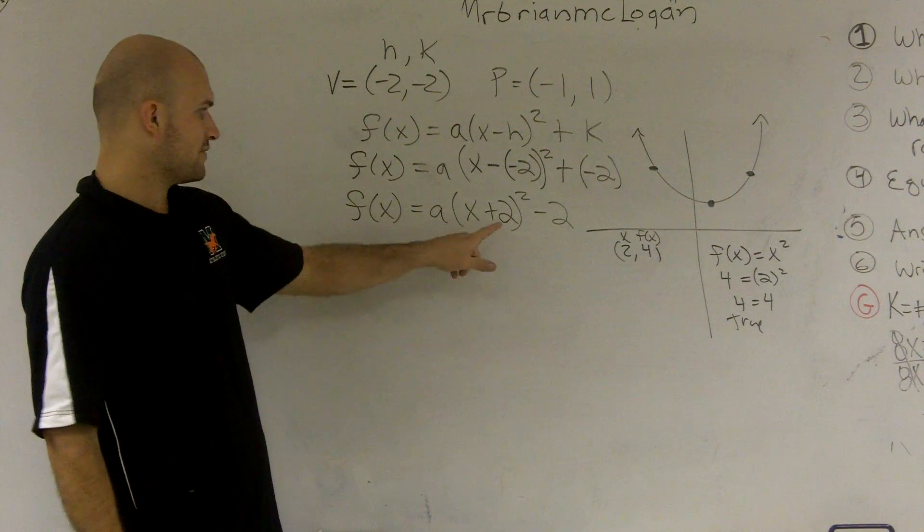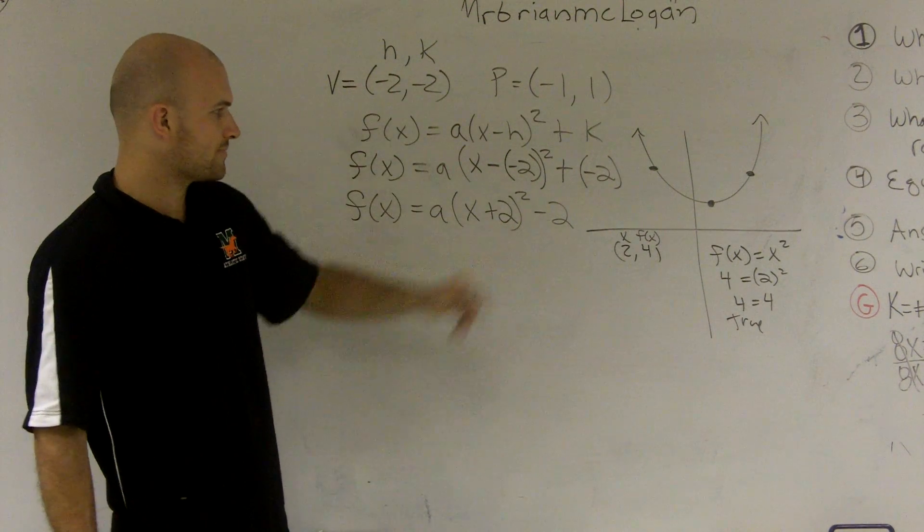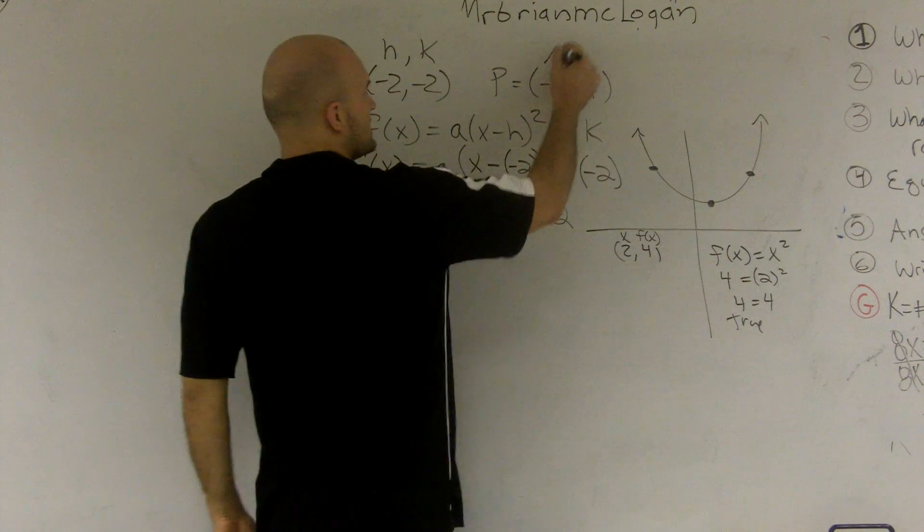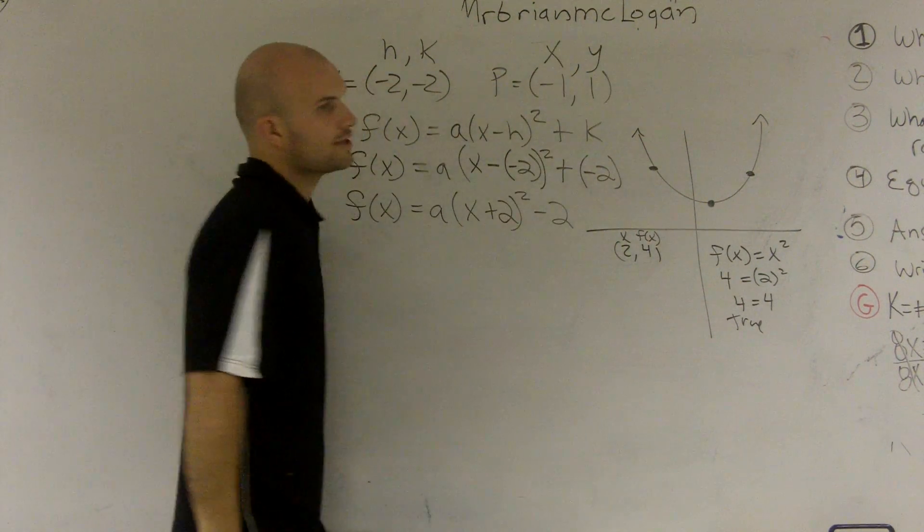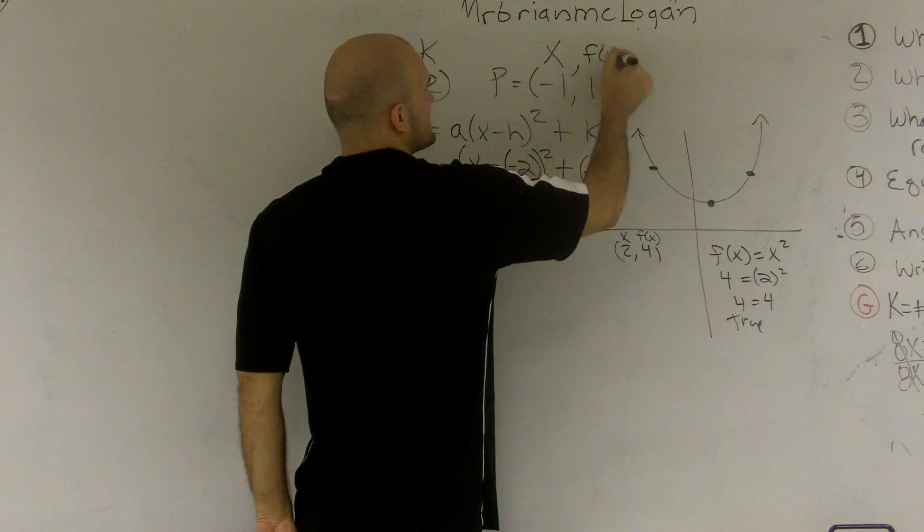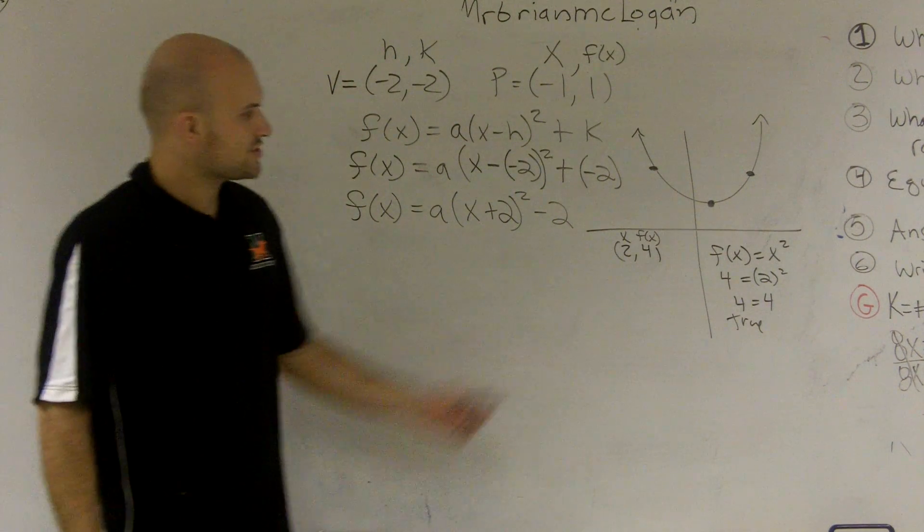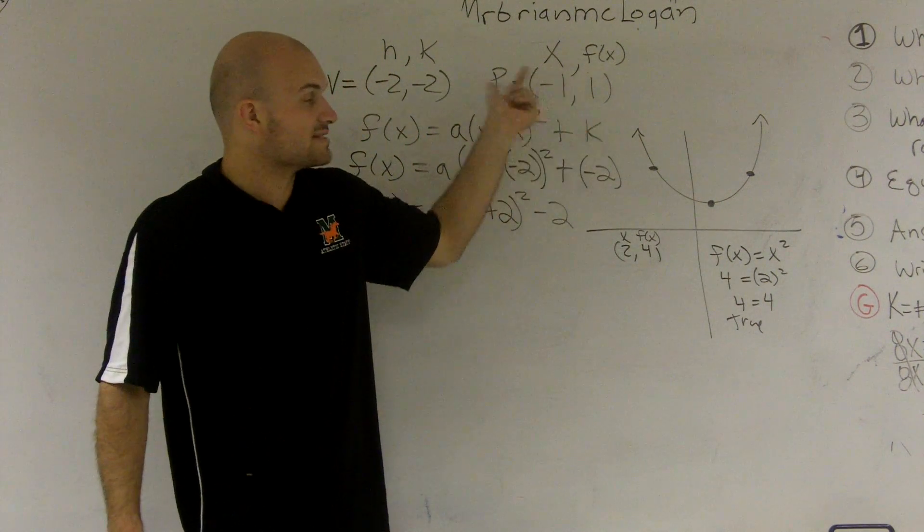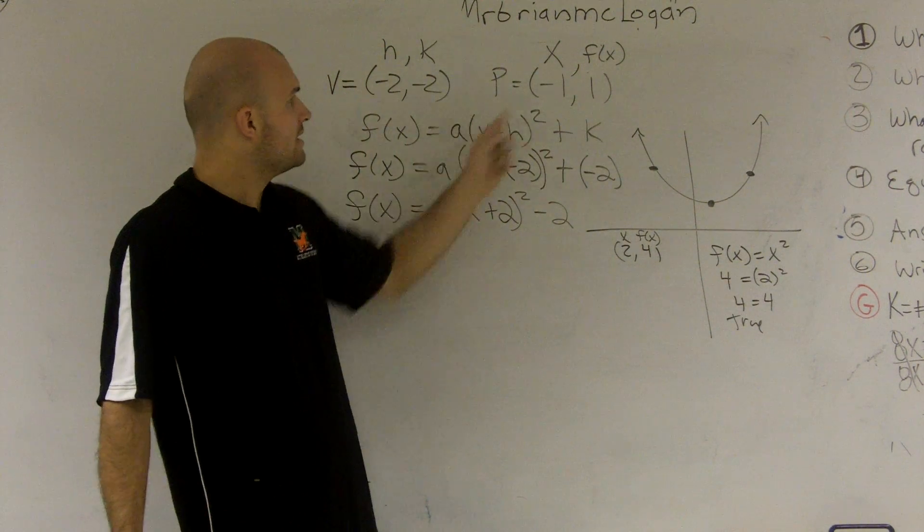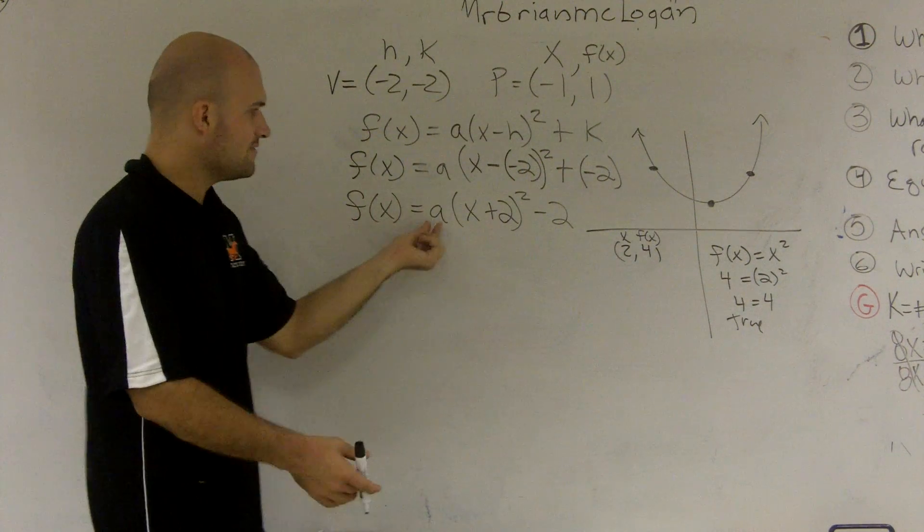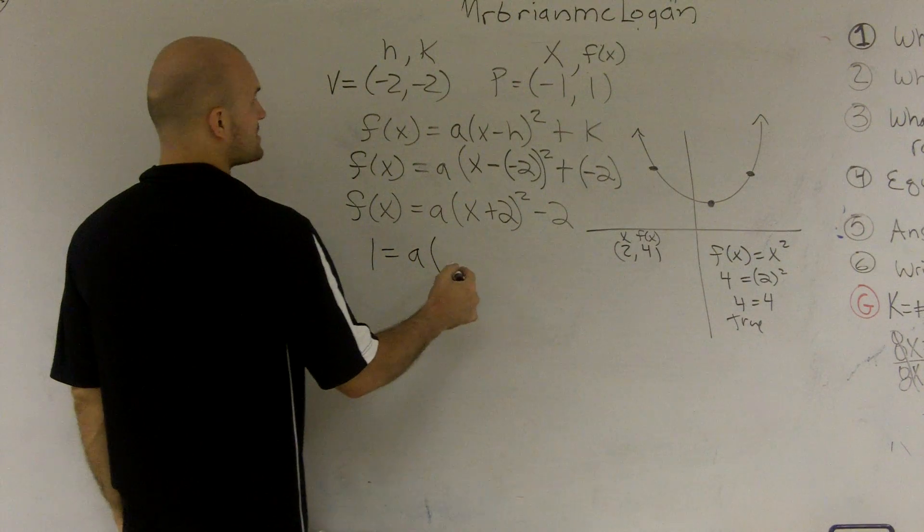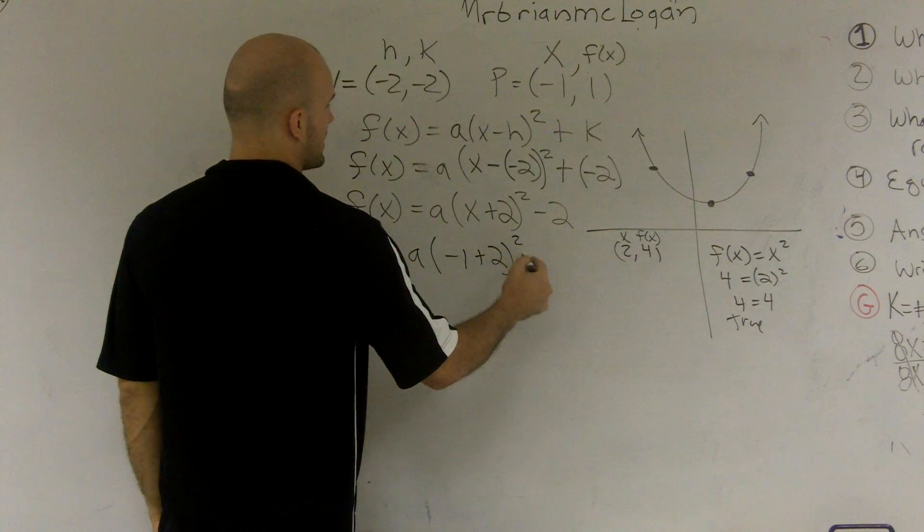Well, since I'm telling you this point is on the graph, I know that this is my x value and this is our y value, right? But we're talking about functions here. So we can rewrite this as f of x. So just like how I did for this problem, I can plug in, since we know or we're assuming this point is on the graph, I can plug negative 1 in for x and 1 in for f of x, leaving me a. So I have 1 equals a times negative 1 plus 2 squared minus 2.